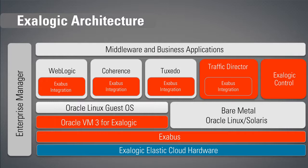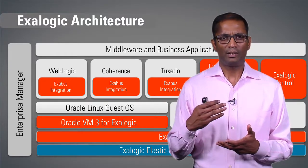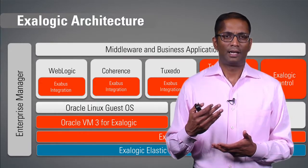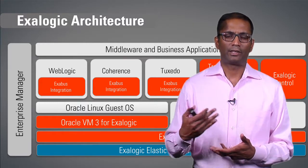This diagram — you've probably seen the Exilogic architecture diagram over many sessions. What this represents is an Exilogic. If you look at the bottom layer, it's the Exilogic elastic cloud hardware — that's the compute, the ZFS, the switches, and so on. Then you have Exabus, which is our InfiniBand backplane, Oracle VM3, or bare metal Linux. Then you have the various upper tier applications like WebLogic, Coherence, Tuxedo, Traffic Director, and Exilogic Control. Exilogic Control is only applicable for the virtual stack. The red components indicate areas where Oracle has done enhancements and R&D to make them work on Exilogic.